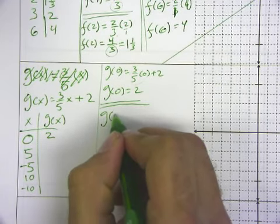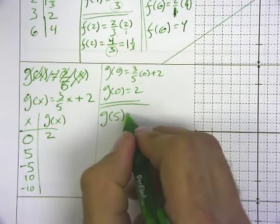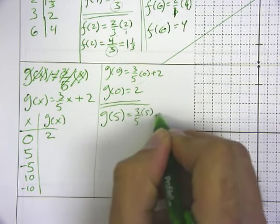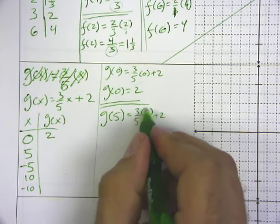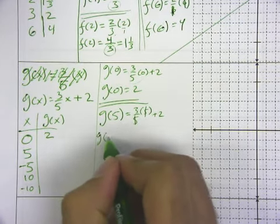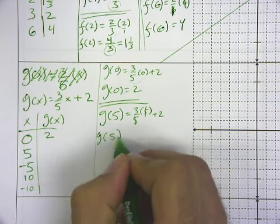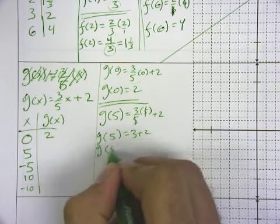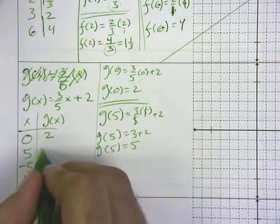g of 5 is going to be 3/5 times 5 plus 2. The 5s will divide out, 5 divided by 5. So we've replaced those both with 1s because that's an equivalent fraction. And we would have 3 plus 2, which is 5. That's just kind of a handy coincidence.